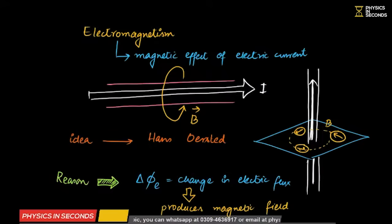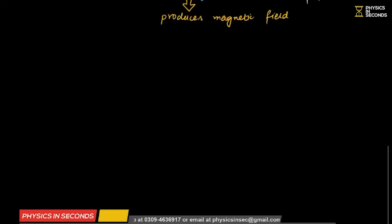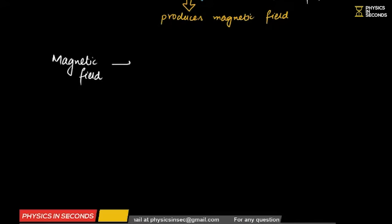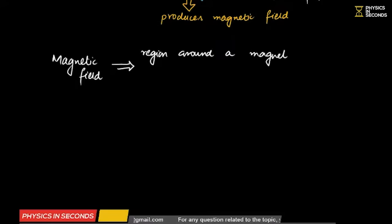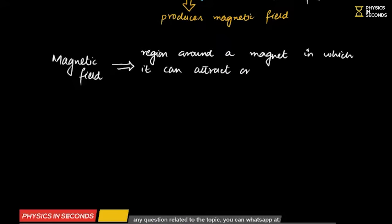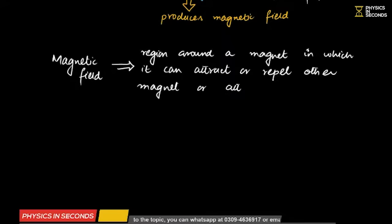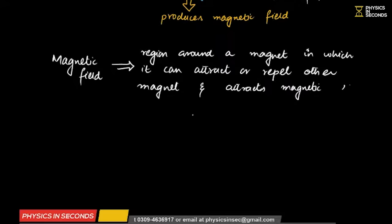Now let's discuss what magnetic field is. Just as you talk about electric field, you should also know what magnetic field is. Magnetic field is a region around a magnet in which it can attract and repel other magnets, and it also attracts magnetic materials such as nickel, cobalt, and iron.